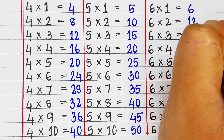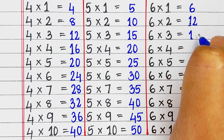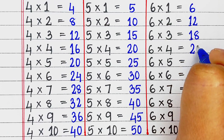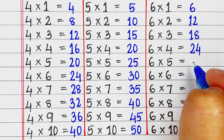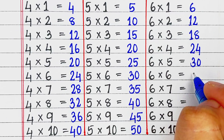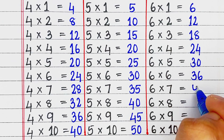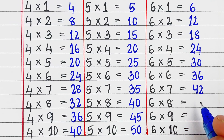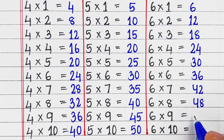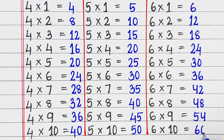Next is table of 6. 6 ones are 6, 6 twos are 12, 6 threes are 18, 6 fours are 24, 6 fives are 30, 6 sixes are 36, 6 sevens are 42, 6 eights are 48, 6 nines are 54, 6 tens are 60.